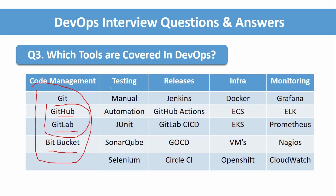For testing, there are two types: manual and automation testing. Multiple tools are available in the market; the main ones highlighted are JUnit, SonarQube, and Selenium. For release and deployment tools, we can use Jenkins, GitHub Actions, GitLab CI/CD, GoCD, or other tools available in the market. For deploying applications, we can use Docker containers, ECS Fargate, Kubernetes (EKS on AWS, AKS on Azure), VMs, on-premises servers, or OpenShift.